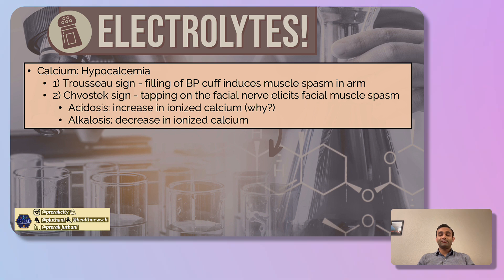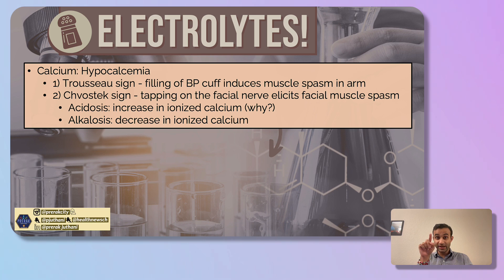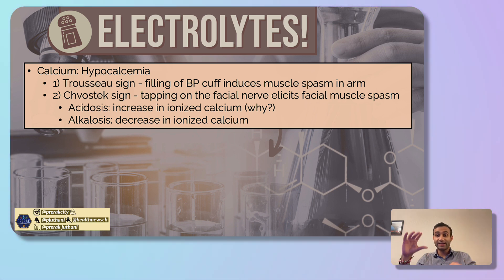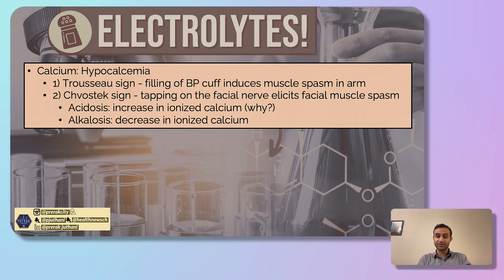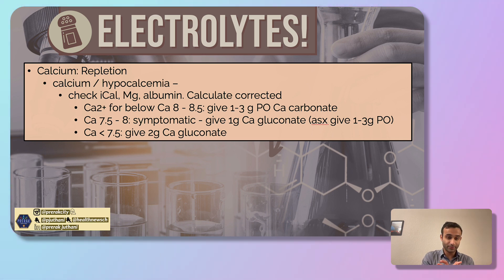There are classic signs of hypocalcemia: Trousseau's sign, where inflating a blood pressure cuff induces a muscle spasm in the arm, and Chvostek's sign, where tapping causes a facial muscle spasm. Acidosis increases ionized calcium — H+ displaces calcium from albumin — while alkalosis decreases it. Once you confirm true hypocalcemia, you can replete with calcium gluconate, usually 1 to 2 grams based on the levels.